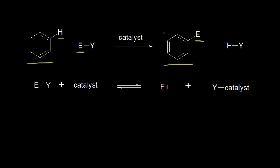Electrophilic aromatic substitution requires a catalyst. The point of the catalyst is to generate your electrophile. The catalyst reacts to produce the positively charged electrophile — and remember, electrophile means electron-loving, so a positively charged species loves electrons. We also form a catalyst complex, which is going to factor into our mechanism.